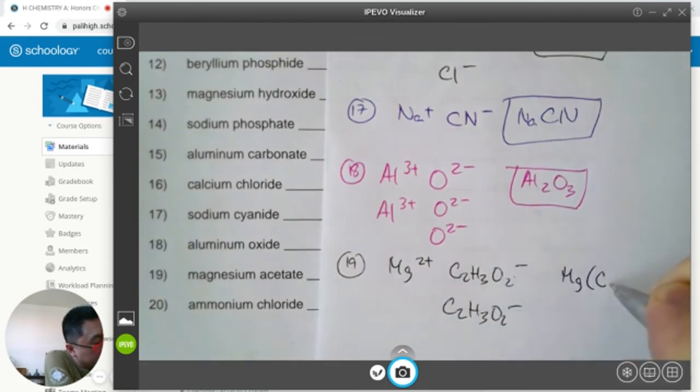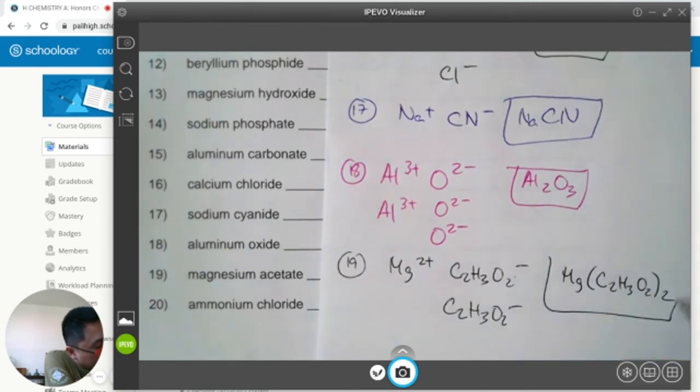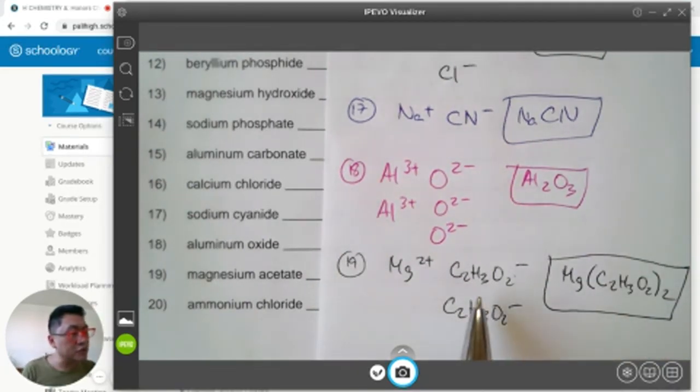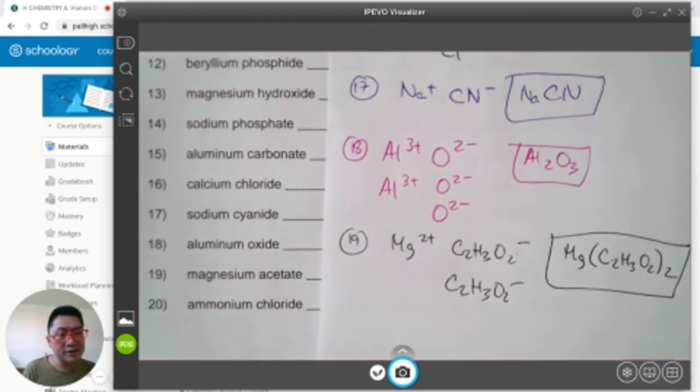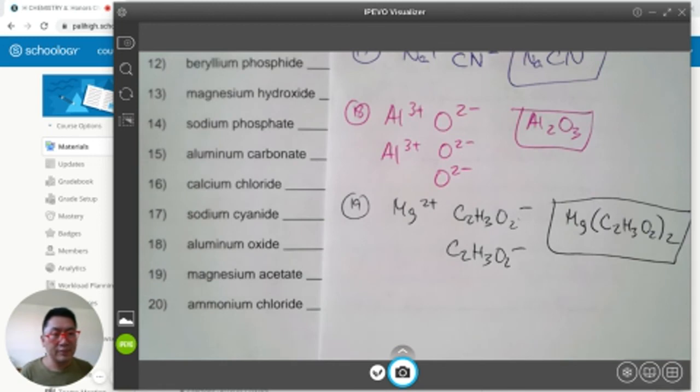The correct formula is magnesium with acetate in parentheses. C2H3O2 is acetate, 2 of those in parentheses. So Mg(C2H3O2)2. Yes, that's technically 4 carbons, 6 hydrogens, and 4 oxygens, but we are not going to distribute that.